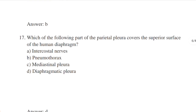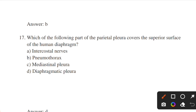Which part of the parietal pleura covers the superior surface of the human diaphragm? Options: intercostal nerves, pneumothorax, mediastinal pleura, diaphragmatic pleura. Answer: option D — diaphragmatic pleura. It is a layer of parietal peritoneum overlaying the thoracic surface of the diaphragm and the lung.